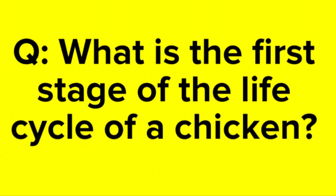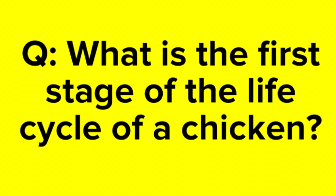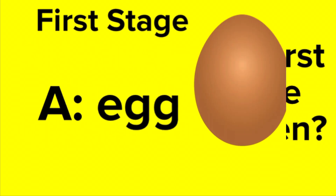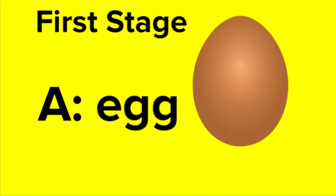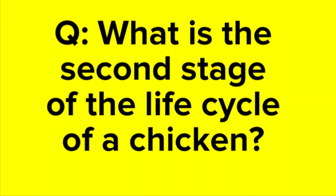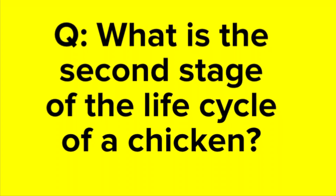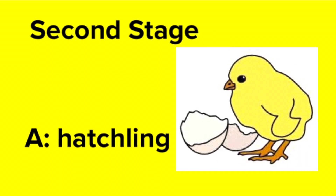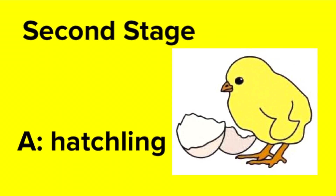What is the first stage of the life cycle of a chicken? Answer: egg. What is the second stage of the life cycle of a chicken? Answer: hatchling.